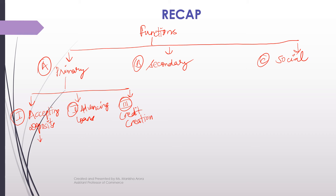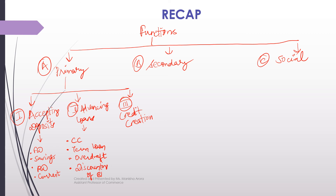In accepting deposits, different accounts were covered: FD account, savings account, recurring deposit account, and current account. In advancing loans, we discussed cash credit (CC limit), term loan, overdraft facility, and discounting of bills of exchange. And in credit creation, the process of how banks create credit by giving loans was discussed — a diagram with figures was drawn to explain this.